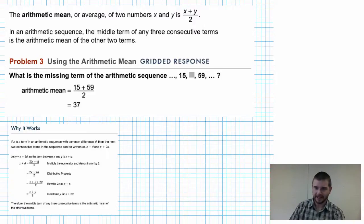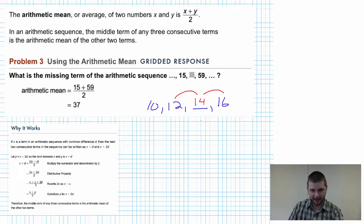So let's consider a very simple arithmetic sequence. Let's say 10, 12, blank, 16. Well, we know already the value to fill in the blank: 10, 12, 14. But because we're adding our common difference and adding two again, notice that 14 is right in the middle of 12 and 16. That's also one way to look at the average of two numbers. The number right in the middle is the average.